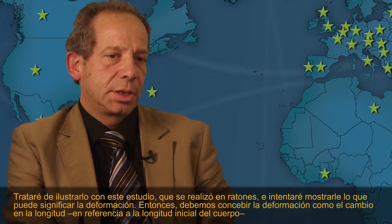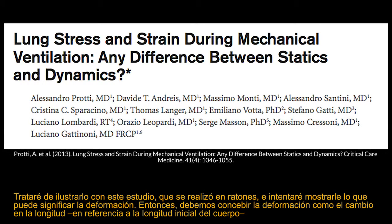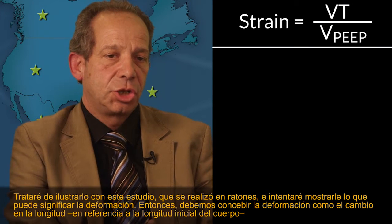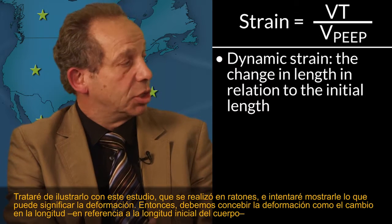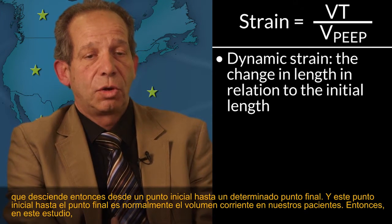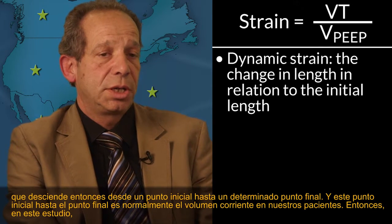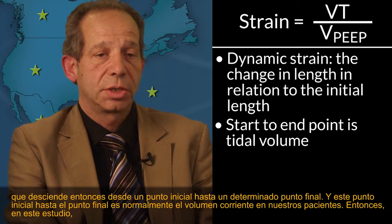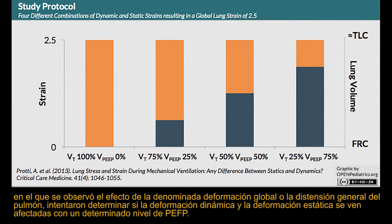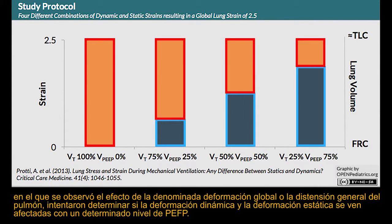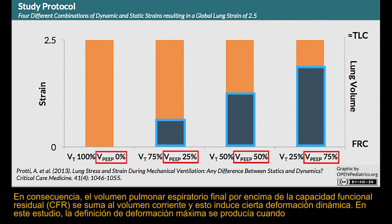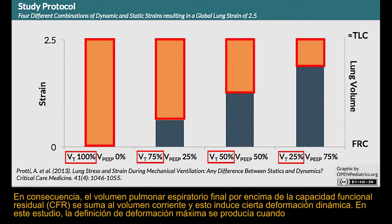Let's try to illustrate this. Strain can be thought of as the change in length in reference to the initial length of the body—distending from a starting point to a certain endpoint. This starting point to endpoint is the tidal volume in our patients. In this study, they looked at the effect of global strain—the overall distension of the lung—and tried to partition it into dynamic strain and static strain. Static strain is given by a certain PEEP level, which represents the end-expiratory lung volume above FRC, or functional residual capacity. Adding a tidal volume on top induces dynamic strain.